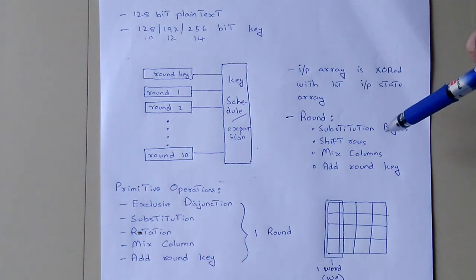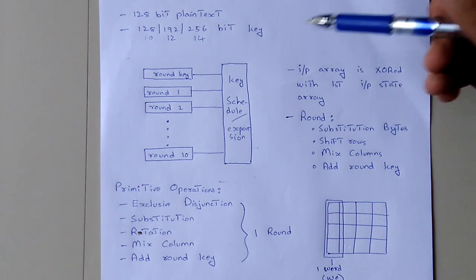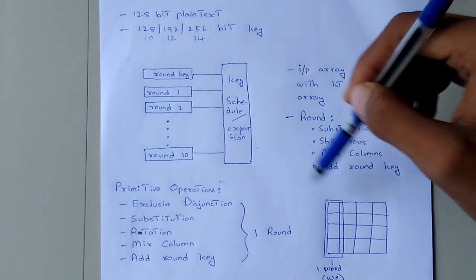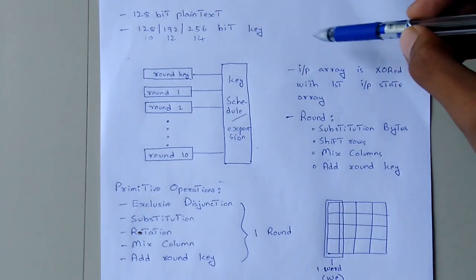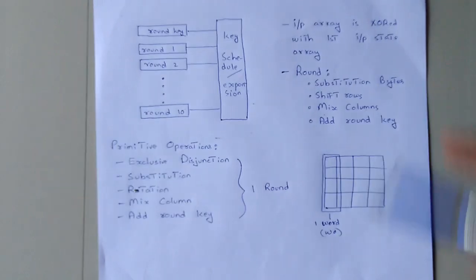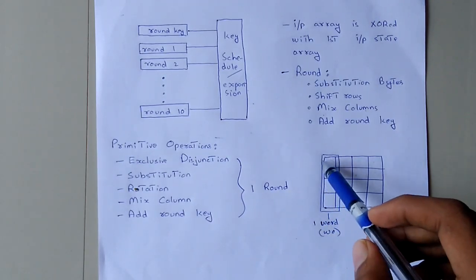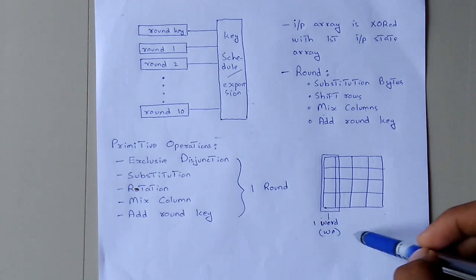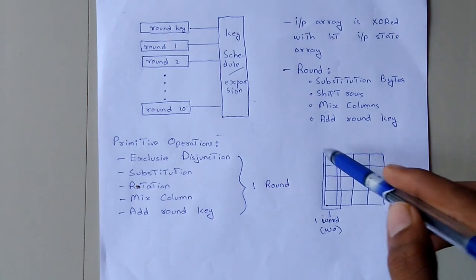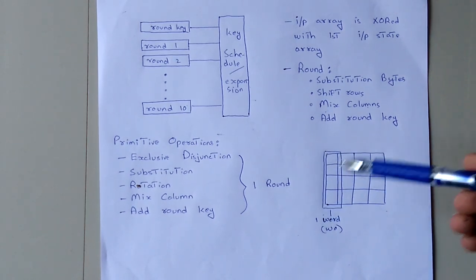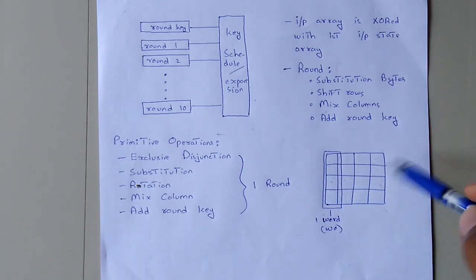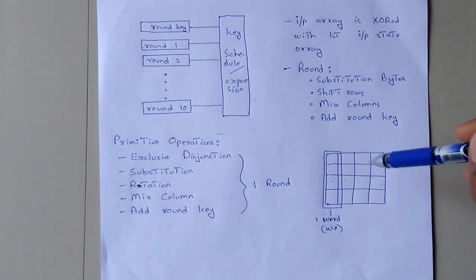We can use 44 keys to perform the AddRoundKey step through key expansion. We can use an 4x4 matrix of 16 bytes. Each column represents one word, so we have word 0, word 1, word 2, and word 3 — that is four words, which equals 16 bytes.